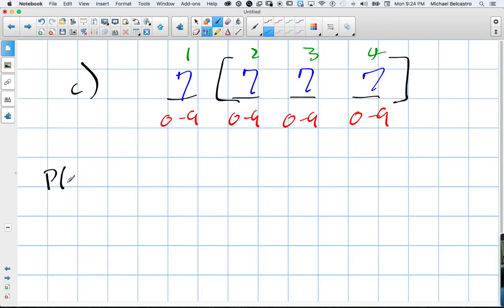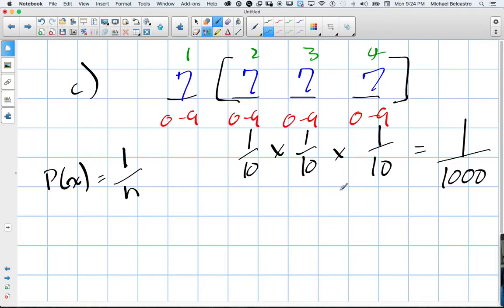And then, what's the probability of getting a seven in all of these options? Well, because we know probability is calculated by one in the number of outcomes, we know there are ten possibilities. And if you're choosing a seven, you have a one in ten chance, a one in ten chance, and a one in ten chance. Well, it's one in ten times one in ten times one in ten. That means there is a one in one thousand chance that they have the four digits are all repeating numbers.